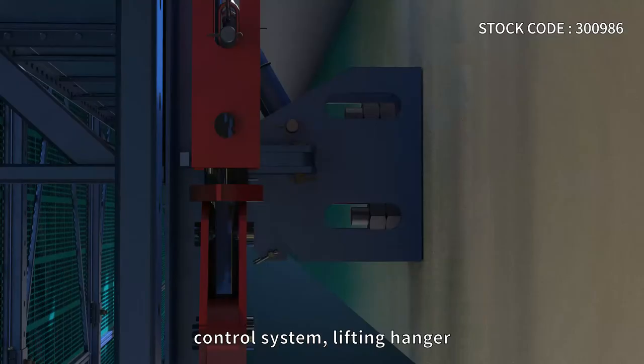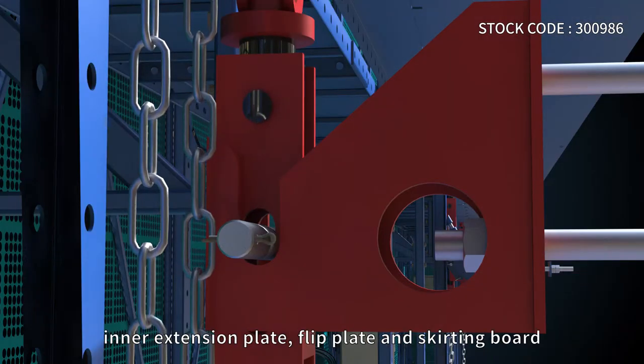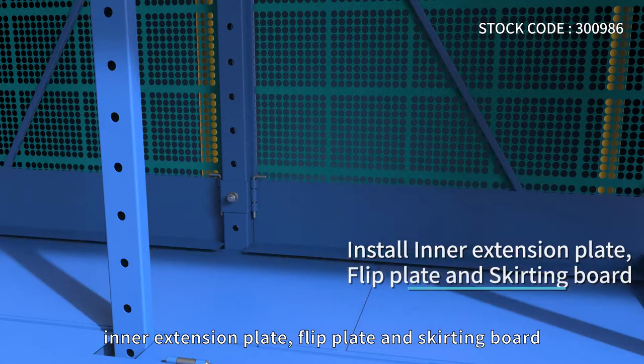Control system components include the lifting hanger, electric chain hoist debugging, inner extension plate, flip plate, and skirting board.